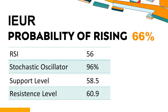An overbought stochastic reading indicates that the stock may be due for a price pullback. An overbought condition occurs when a stock's price rises too fast and too high in a short period of time and can be a sign that buying pressure has exhausted. Trend Outlook: The probability of IEUR share price rising is 66%. Combining multiple technical analysis indicators, IEUR has 1 bullish signal and 5 bearish signals.